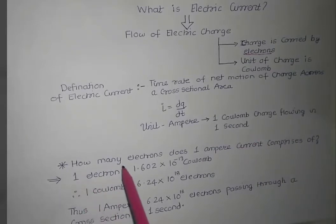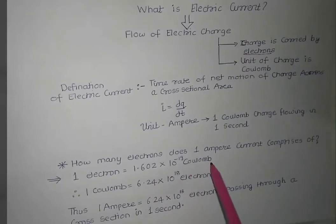Now the question arises how many electrons does 1 ampere current comprise of? See 1 electron has a charge of 1.602 × 10^-19 Coulomb.